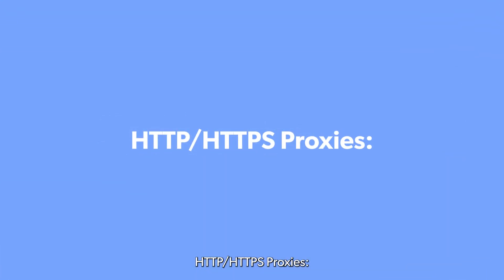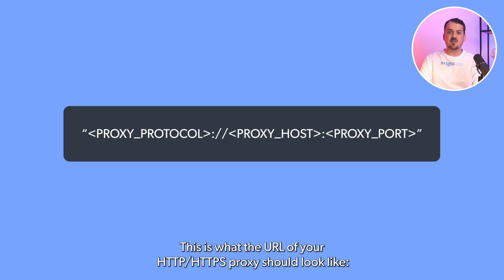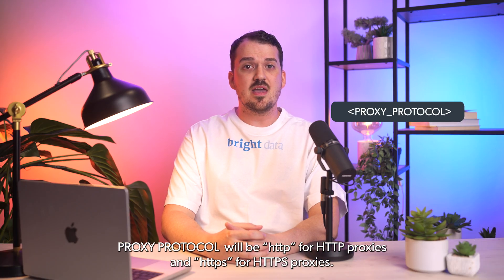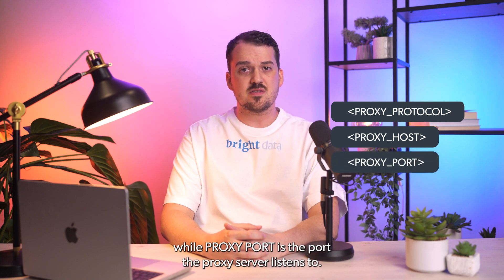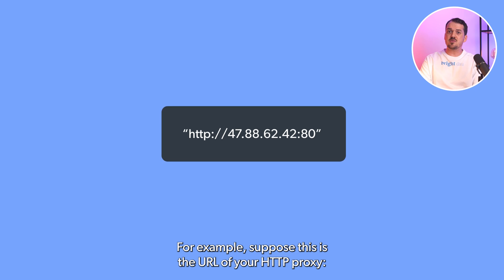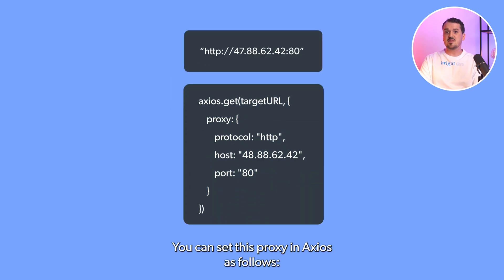HTTP and HTTPS proxies. This is what the URL of your HTTP or HTTPS proxy should look like. The proxy protocol will be HTTP for HTTP proxies and HTTPS for HTTPS proxies. The proxy host is generally a raw IP, while the proxy port is the port the proxy server listens to. For example, suppose this is the URL of your HTTP proxy — you can set this proxy in Axios as follows.